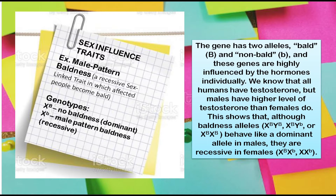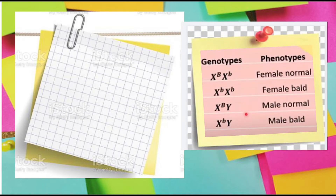We know that all humans have testosterone, but males have higher levels of testosterone than females do. This shows that although baldness alleles — XB/Yb, XB/Yb, XB/XB — behave like a dominant allele in males, they are recessive in females. For females, only XB/XB results in baldness, while XB/Xb females are not bald. We have here the genotypes and phenotypes of human baldness: XB/XB is female normal, and XB/Xb means female bald.